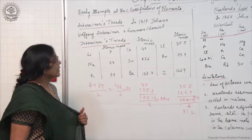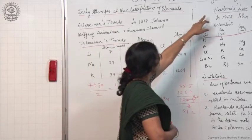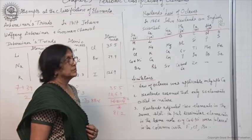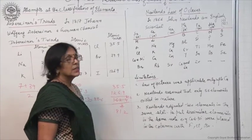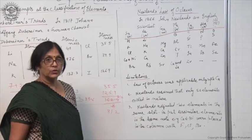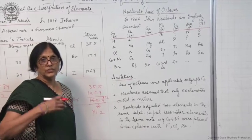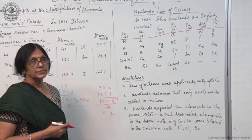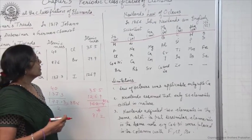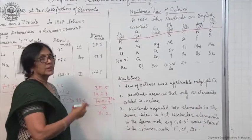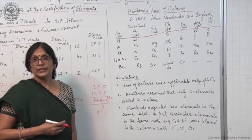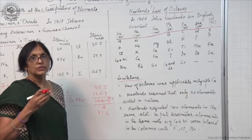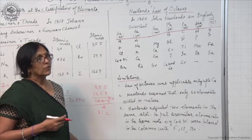Then another scientist, Newlands, gave the Law of Octaves. He arranged the elements known at that time in increasing order of their atomic masses. And he found that the eighth element's properties were similar to the properties of the first element.